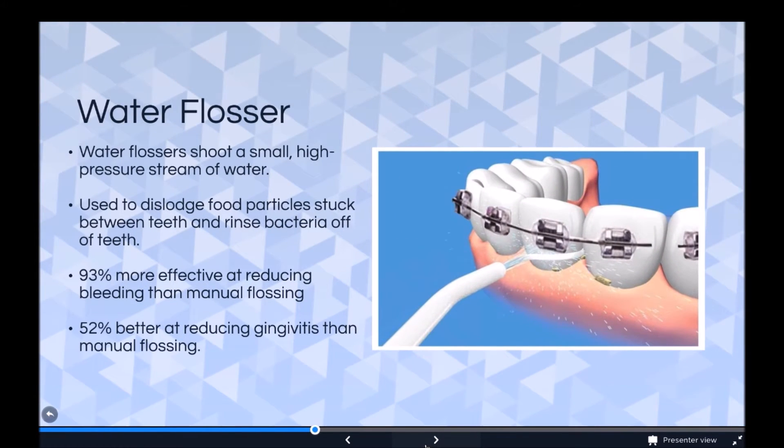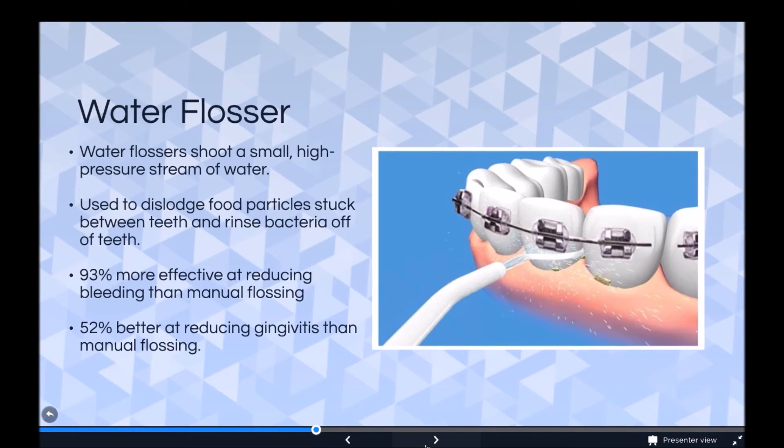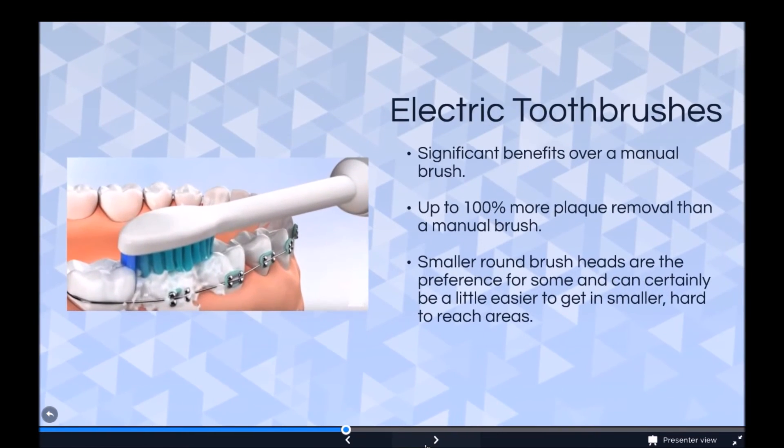Water flosser: water flossers shoot a small high pressure stream of water used to dislodge food particles stuck between teeth and rinse bacteria off of teeth. 93% more effective at reducing bleeding than manual flossing, 52% better at reducing gingivitis than manual flossing.